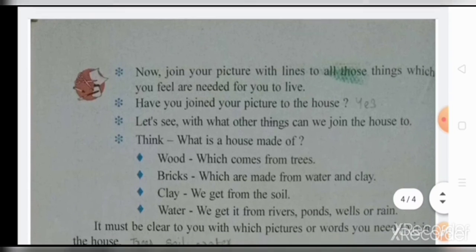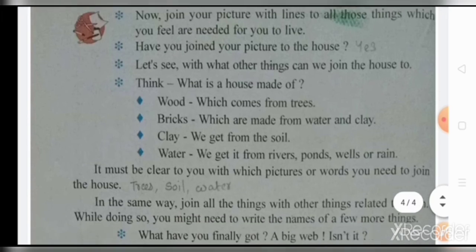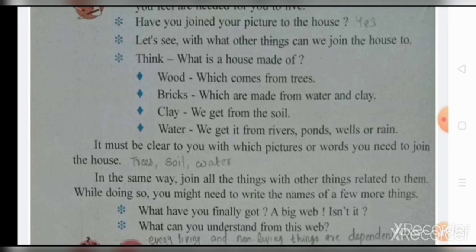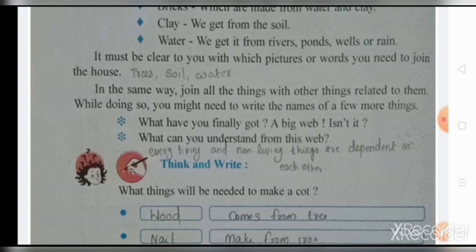Draw your picture in the blank space. Now join your picture with lines to all those things which you feel are needed for your life. Have you joined your picture to the house? Let's see what other things we can join the house to. Think — what is the house made of? The house is made of wood, which comes from trees. We need bricks, which are made from water and clay. Clay comes from the soil, and water comes from rivers, ponds, wells, or rain. So you join the house to trees, soil, and water. Join all things with other things related to them, and what you finally get is a big web. Every living and non-living thing is dependent on each other.